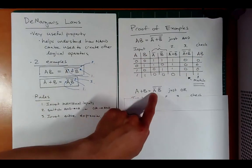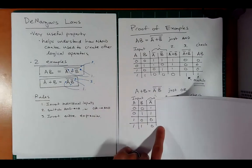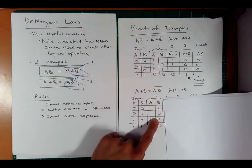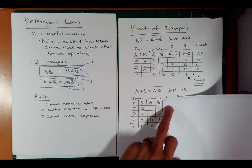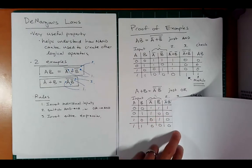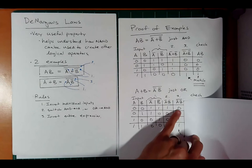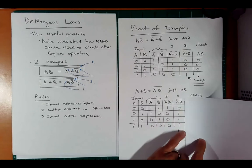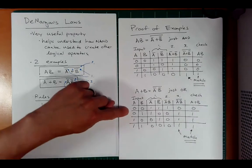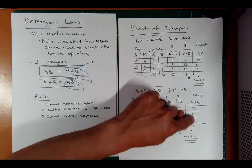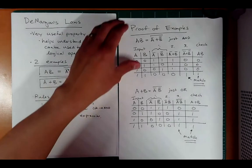For the second law, A plus B equals this: same truth table, same A-inverse and B-inverse. But this time we AND them instead of OR. A-inverse AND B-inverse gives 1,0,0,0. Inverting gives 0,1,1,1. That matches OR behavior — anytime there's a 1 in either input, we get true. Both cases of DeMorgan's Laws are confirmed.